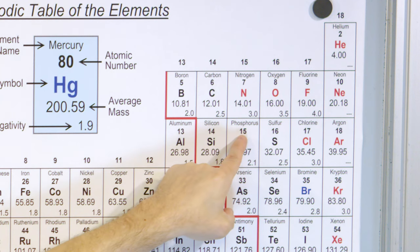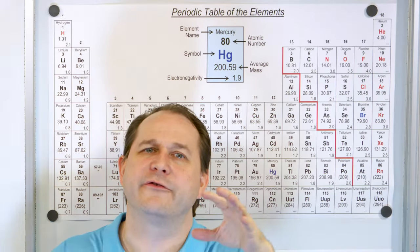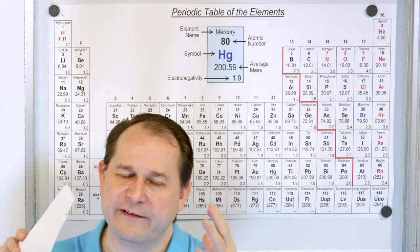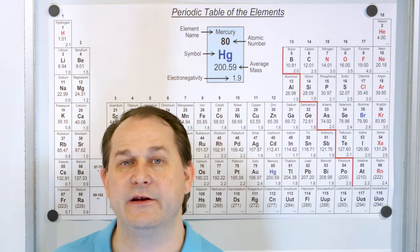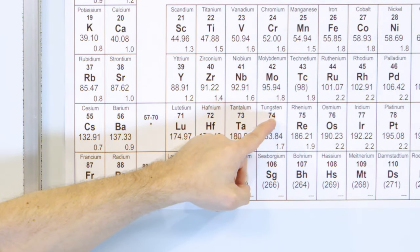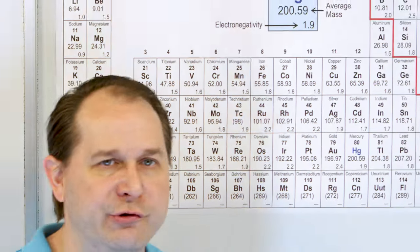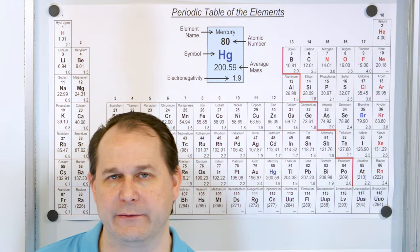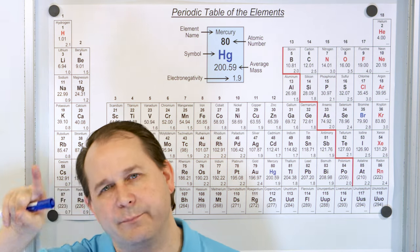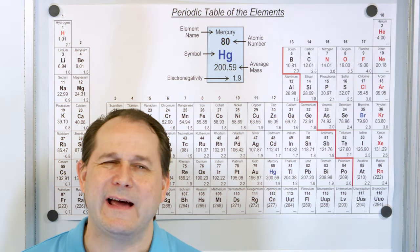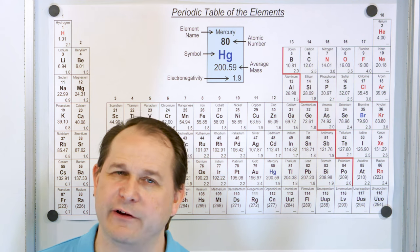If you look at phosphorus — atomic number 15 — there are 15 protons in the nucleus, and therefore there must be 15 electrons surrounding the nucleus because a phosphorus atom is neutral. Over here, tungsten — used in light bulbs — has 74 protons in the nucleus, so a neutral tungsten atom has 74 electrons surrounding the nucleus in a cloud. Think of that solar system picture, but just know that picture isn't really right — we'll revise it as we go on.